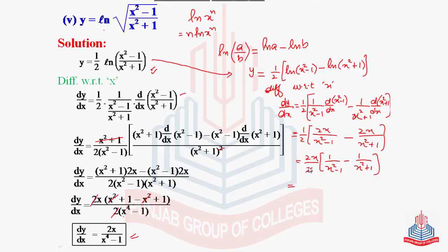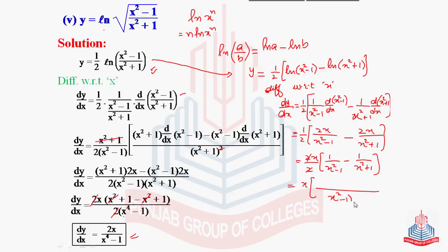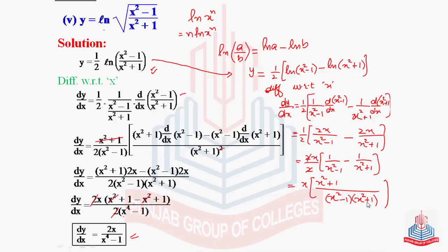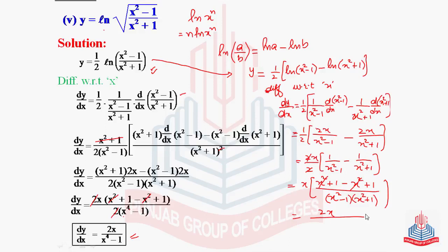The 2 cancels out. Taking LCM as (x² - 1)(x² + 1): the (x² - 1) cancels giving (x² + 1), and (x² + 1) cancels giving (x² - 1). Applying the minus sign gives minus(x² - 1), so 1 + 1 = 2. Using the algebraic formula (a - b)(a + b) = x⁴ - 1 in the denominator, the result is 2x/(x⁴ - 1), the same answer from a different approach.